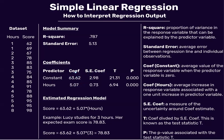The standard error of the coefficient is a measure of the uncertainty around the coefficient estimate — for hours it is 0.73. The t-test statistic is the coefficient divided by the standard error: for hours, 5.07 ÷ 0.73 = 6.94. The p-value is the p-value associated with that t-statistic. If the p-value is less than a threshold such as 0.05, there is a statistically significant association between the predictor and response variable. Here the p-value is 0.000, which is less than 0.05, so hours has a statistically significant association with score.